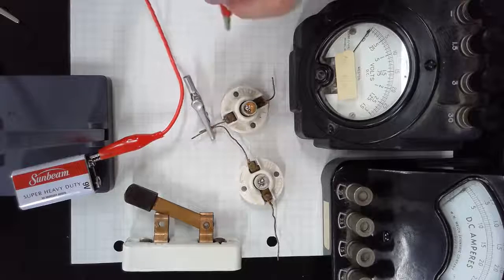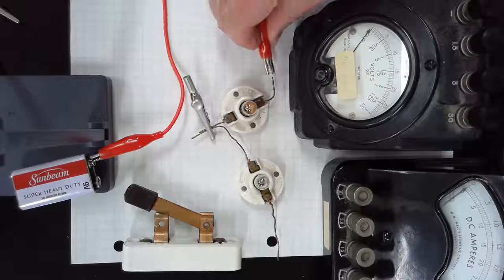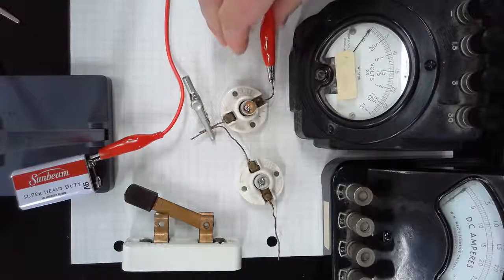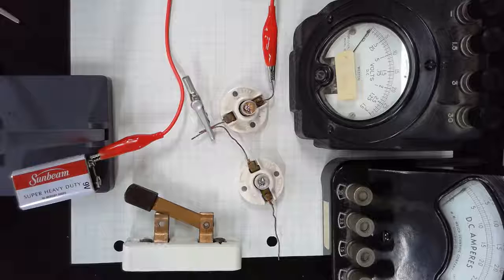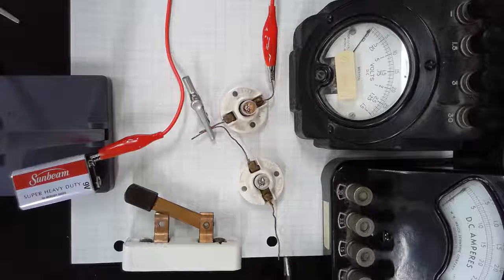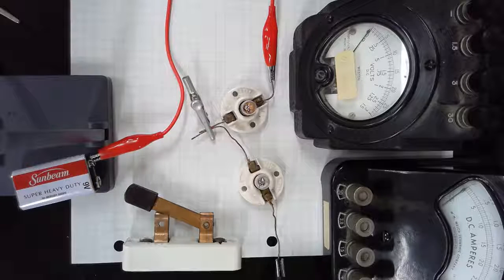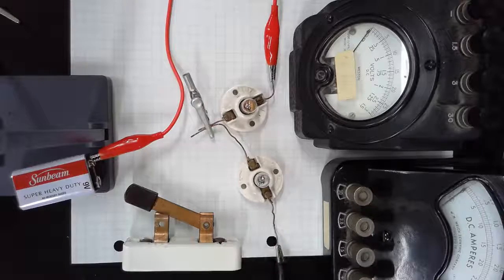We're then going to hook that to one side of the bulb. I'm using two bulbs here because this battery has enough voltage it would burn out just one. And then I'm going to hook another lead to the other side of the bulb.